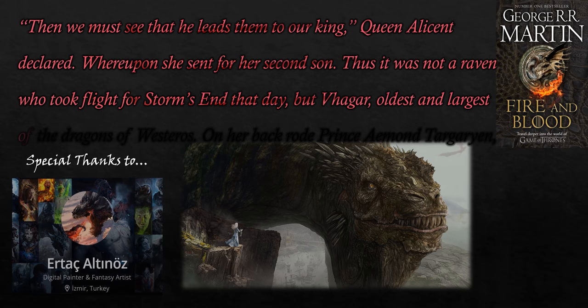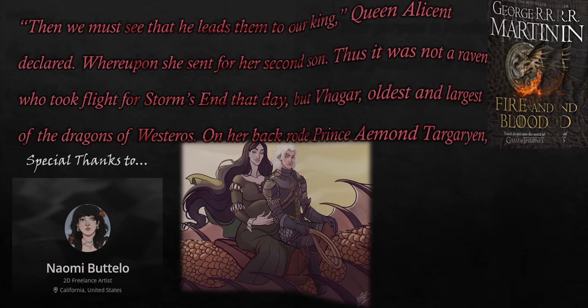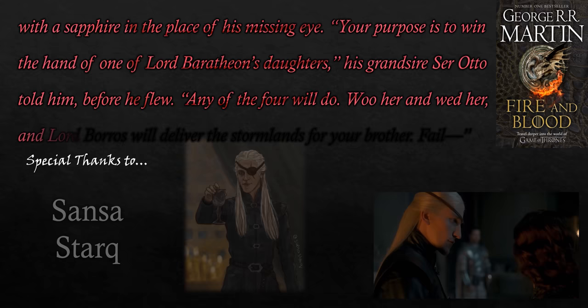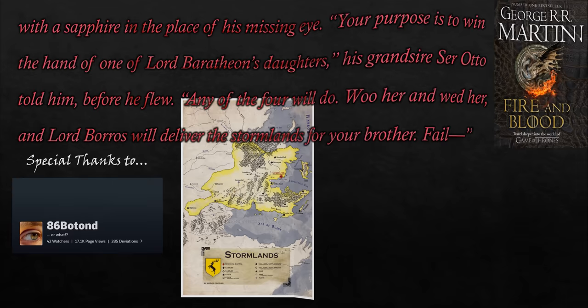'Then we must see that he leads them to our king,' Queen Alicent declared, whereupon she sent her second son. Thus it was not a raven who took flight for Storm's End that day, but Vhagar — oldest and largest of the dragons of Westeros. On her back rode Prince Aemond Targaryen, with a sapphire in the place of his missing eye. 'Your purpose is to win the hand of one of Lord Baratheon's daughters,' his grandsire Ser Otto told him before he flew. 'Any of the four will do. Woo her and wed her and Lord Borys will deliver the Stormlands for your brother.' 'I will not fail,' Prince Aemond blustered. 'Aegon will have Storm's End and I will have this girl.'